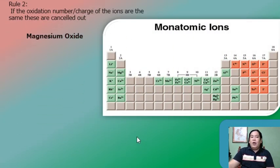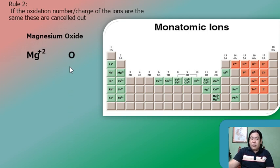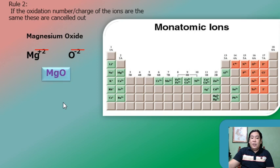Rule number two: if the oxidation numbers of both the metallic and non-metallic ions are the same, they cancel out. For example, magnesium is positive 2 and oxygen is negative 2 because it belongs to Group 6A — all Group 6A elements have a charge of negative 2. Since both values are equal, they cancel. You simply combine the two symbols, and the final formula is MgO.